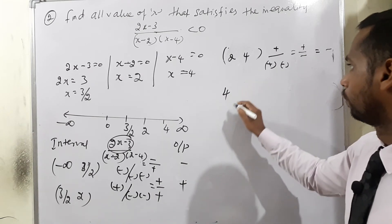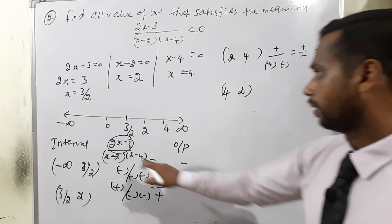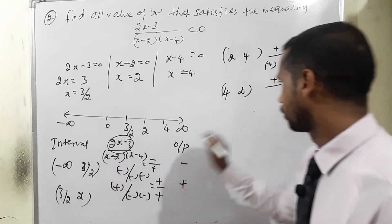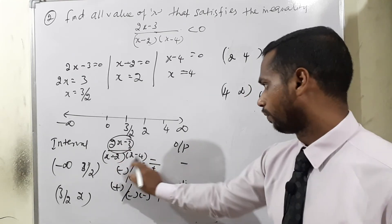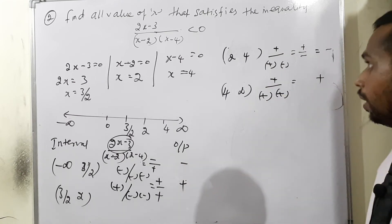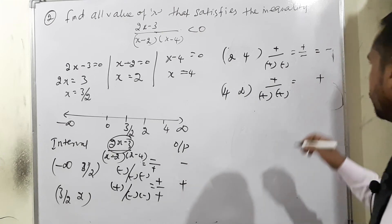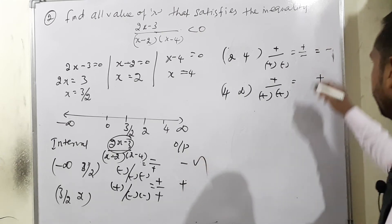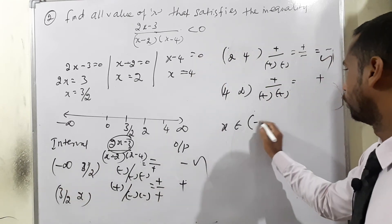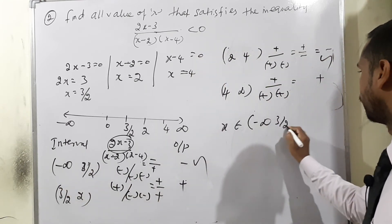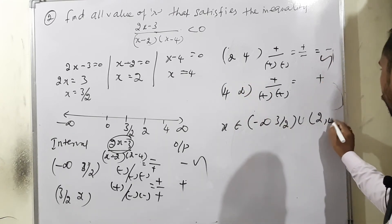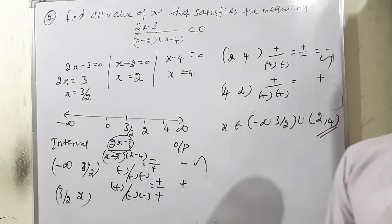Fourth interval (4,+∞), take x=5: (2(5)-3)/((5-2)(5-4)) = 7/(3×1) = positive. The condition is <0, so we need negative outputs: first and third intervals. Therefore x belongs to (-∞, 3/2) ∪ (2,4).